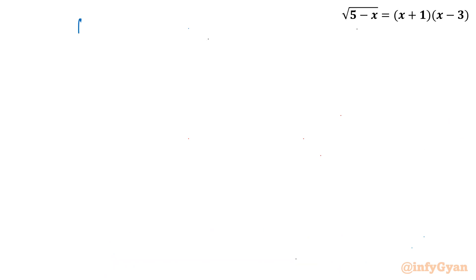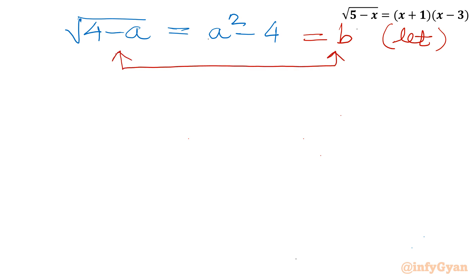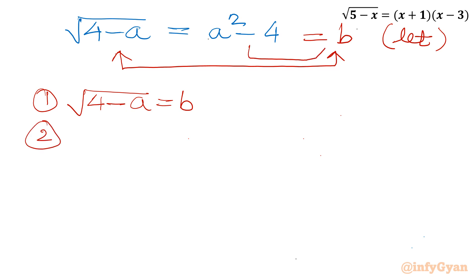So square root (4 minus a) equals a squared minus 4. Now I will consider this middle expression equal to b — that is our assumption. From the equality of first and last terms I frame the equation: square root (4 minus a) equals b. And from the middle equality: a squared minus 4 equals b.